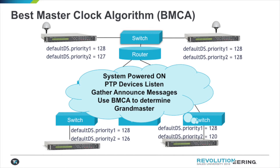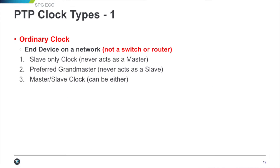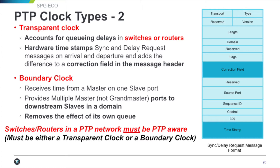When the system is powered on, the devices listen to gather announce messages and use the best master clock algorithm to determine the grandmaster. Ordinary clocks are devices that are not a switch or a router — they could be a slave, a master, or either, but they are not a switch or router.